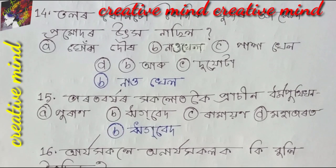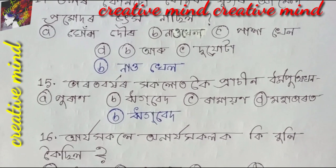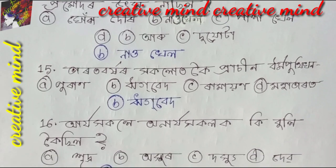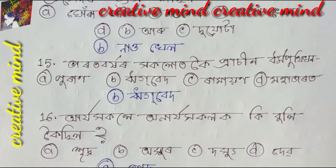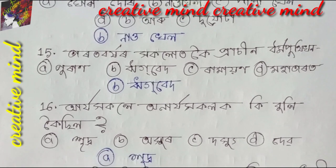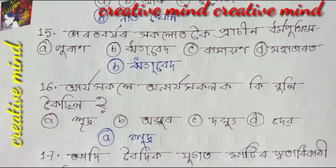Question number 16: Aarja hakole anajja hakole kibuli qeishil. Option A: Khudra. Option B: Ohur. Option C: Dosu. Option D: Debo. Yarekhu Dota to hoi se. Option A: Khudra.